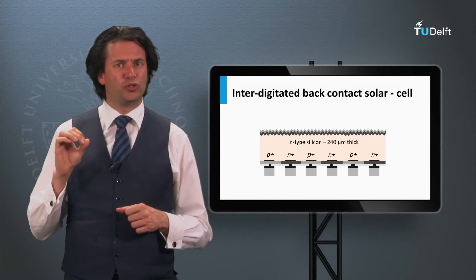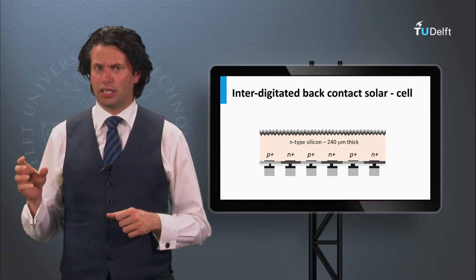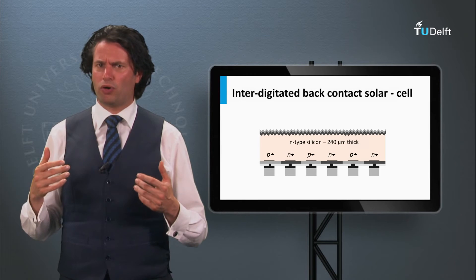The N-type wafers have some advantages above P-type wafers. First, the N-type wafers do not suffer from light-induced degradation. In P-type wafers, simultaneously boron and oxygen are present,